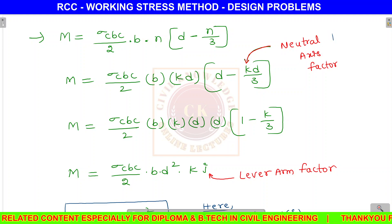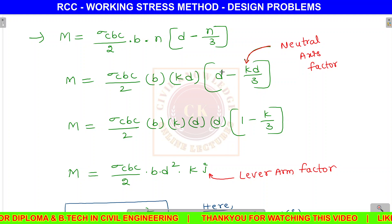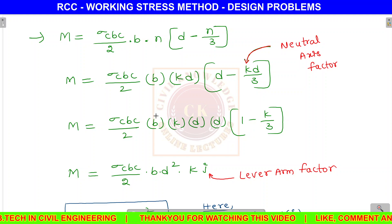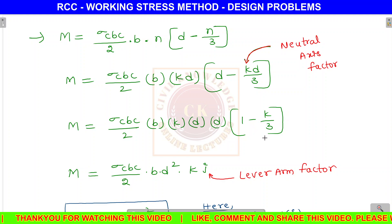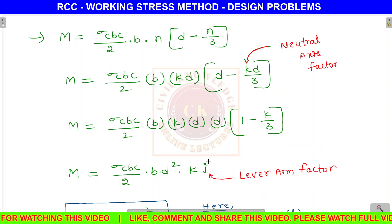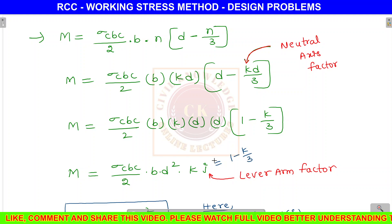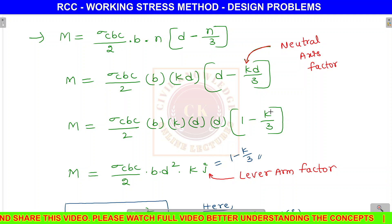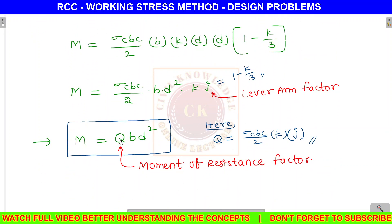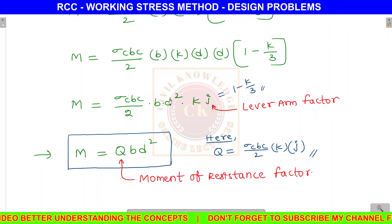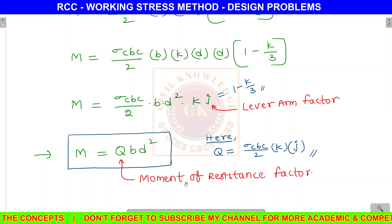The lever arm factor j is equal to 1 minus k by 3. This gives the distance from the compression centroid to the tension steel. The moment of resistance factor Q is used in the formula M equals Q·b·d², where Q is the moment of resistance factor.